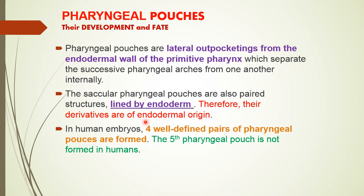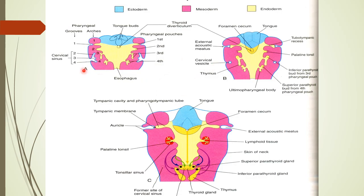There are four pairs of pharyngeal pouches found in human embryos — they are present in pairs, so say four pairs, not just four. The fifth pharyngeal pouch is not formed in human embryos, though it is formed in lower mammals, and in some mammals six pouches also form. In humans only four pharyngeal pouches develop. This diagram shows the outpocketings of the pharyngeal endoderm: first pouch, second pouch, third pouch, and fourth pouch, which give rise to various derivatives.